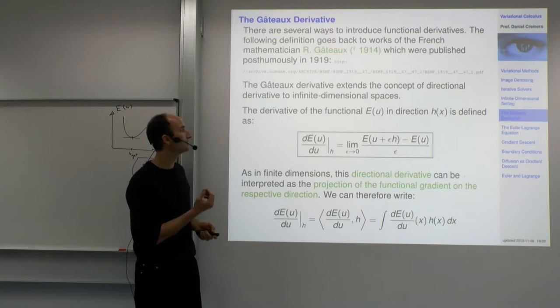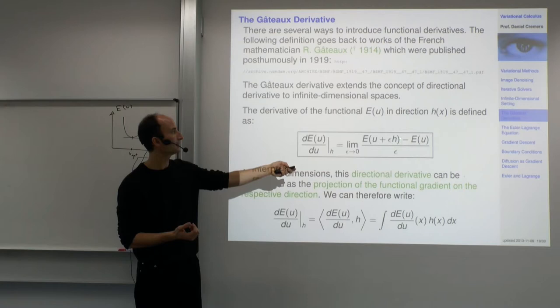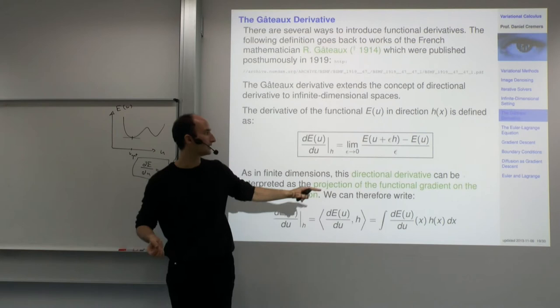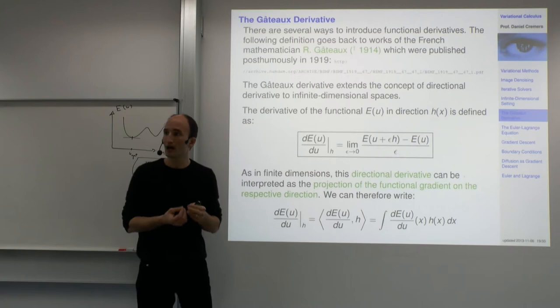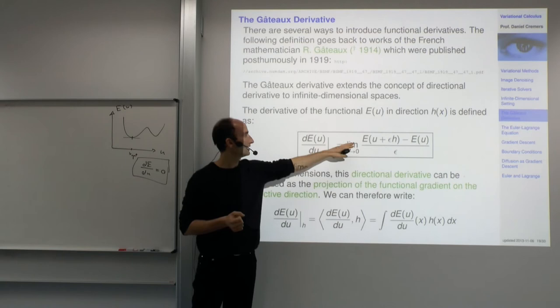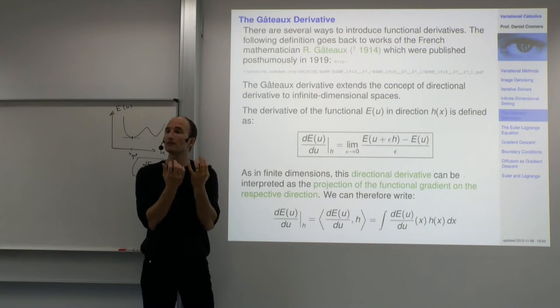The idea was that we perturb an initial function u by adding another function h to it, and we scale that added function by epsilon. Then if we let epsilon go to zero and divide the difference by epsilon, we get the derivative — how does the energy change if we perturb u infinitesimally?